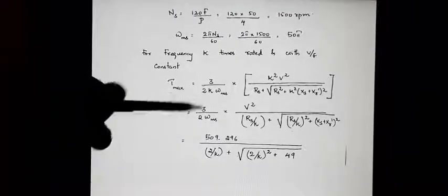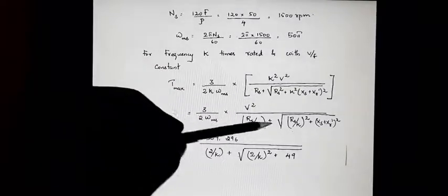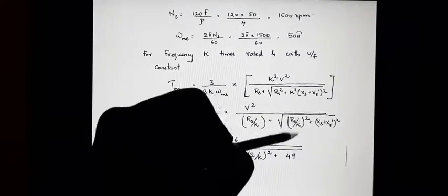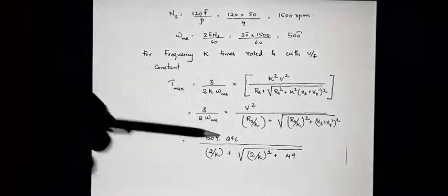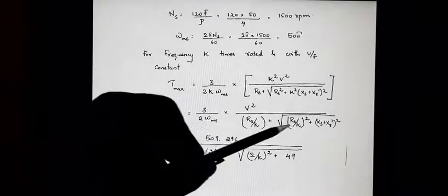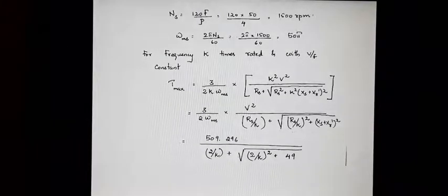Taking k² out from the denominator: one k is already outside, and the remaining k comes from inside the square root bracket (√k² = k), giving Rs/k + √(Rs/k)² + (Xs + Xr')² in the denominator. The k² in the numerator and denominator cancel, yielding the final simplified maximum torque relation. After this we will substitute the values.